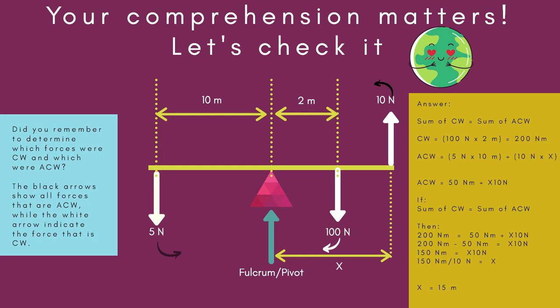From there, we get 50 Newton meters plus X, 10 Newtons. So, if the sum of clockwise moments is equal to the sum of anti-clockwise moments, then we just equate. Remember, if it's in a state of equilibrium, then the system is not going to tip or turn or anything like that. It's going to be balanced. Right? What you put in is what you get out.